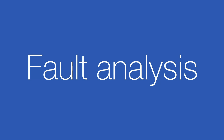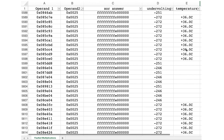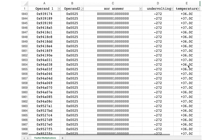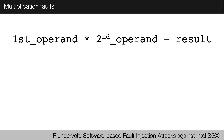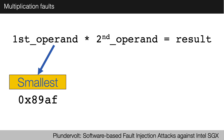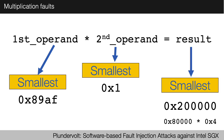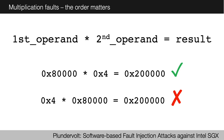We obtained thousands of results from creating random multiplications and built a database. One thing we decided to include was the operating temperature — we observed that slightly less undervolting was required on a hot day. However, all our faults were obtained at normal ambient office temperatures. We came to a few conclusions: the smallest first operand we could fault was 89AF, the smallest second operand was 1, and the smallest cumulative result was hex 200000. We also found that the order mattered — we could fault one multiplication but not its reverse.